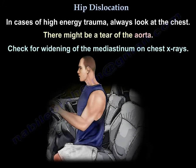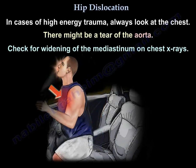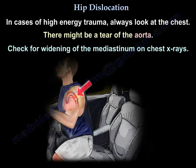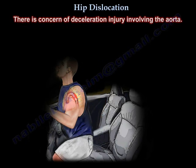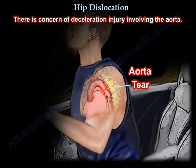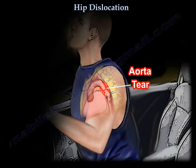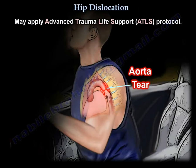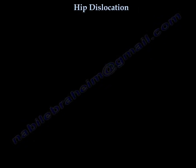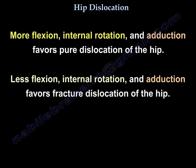In cases of high-energy trauma, always look at the chest — there might be a tear of the aorta. Check for widening of the mediastinum on chest X-rays, as there is a concern for deceleration injury involving the aorta. You may apply the ATLS protocol. More flexion, internal rotation, and abduction favors pure dislocation; less of these favors fracture dislocation of the hip.